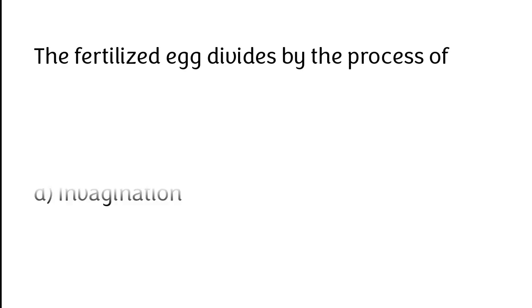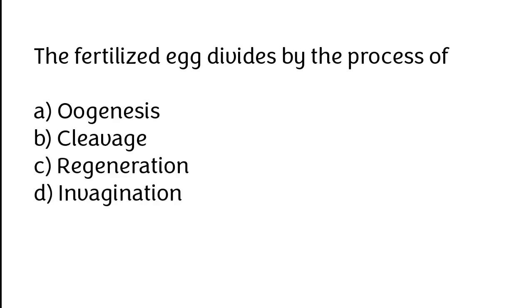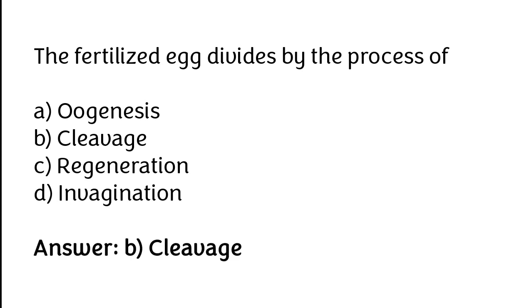The fertilized egg divides by the process of: A) Oogenesis, B) Cleavage, C) Regeneration, D) Invagination. The correct answer is option B — the fertilized egg divides by the process of cleavage.